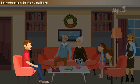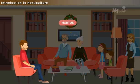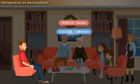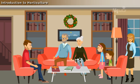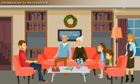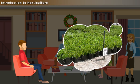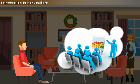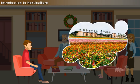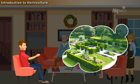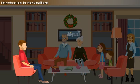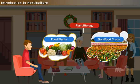The word horticulture is derived from two Latin words: hortus, meaning garden, and cultura, meaning cultivation. In short, horticulture means garden cultivation. In a broad sense, horticulture is defined as an art and science that involves the cultivation, propagation, processing, management, and marketing of ornamental plants, flowers, nursery plants, turf, vegetables, fruits, and landscape design. Horticulture is one of the branches of plant biology; besides, it incorporates food plants and non-food crops.